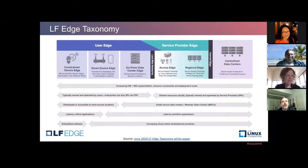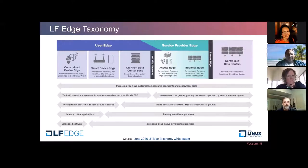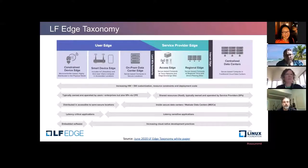I'll talk about the taxonomy at a high level. This is a view from the paper — highly recommend going to download it; just type in LF Edge taxonomy and it should be the first hit. As we've been saying, it's a continuum. As you go from centralized data centers to constrained devices, there are a couple of key paradigm shifts in terms of trade-offs. We've got massively scalable centralized data centers on one end, and eventually trillions of constrained devices out in the field on the other. The scale factor is exponential. On the right side, centralized services tend to be shared across many users. The key division is this last mile network — that point where you switch from a wide area network to a local area network.